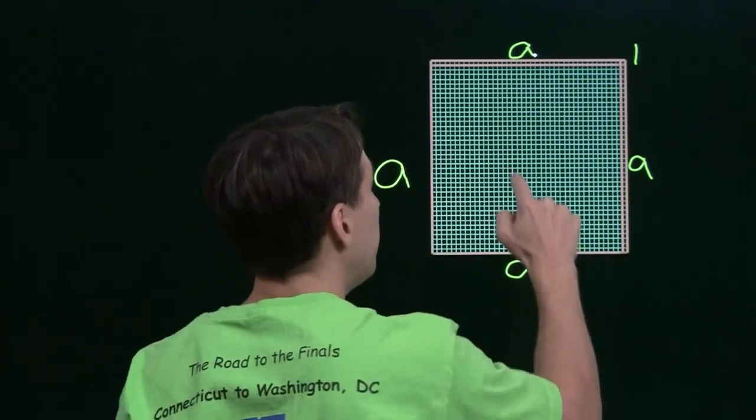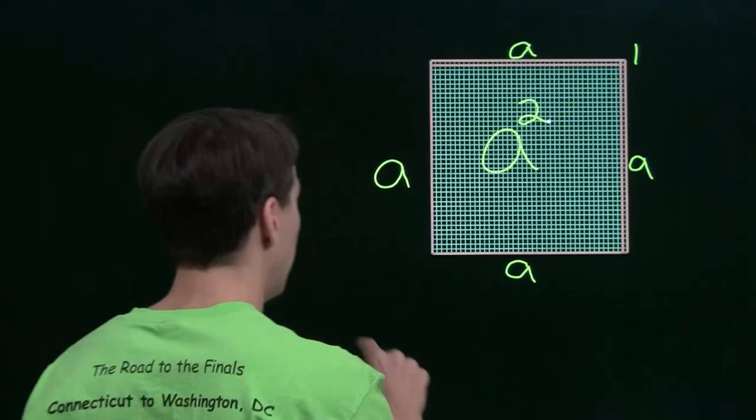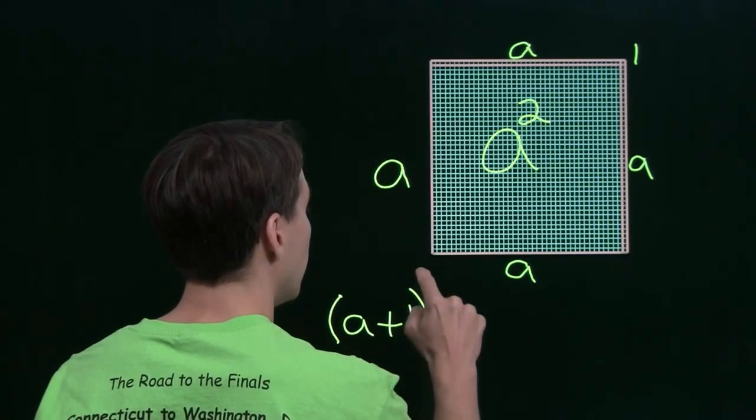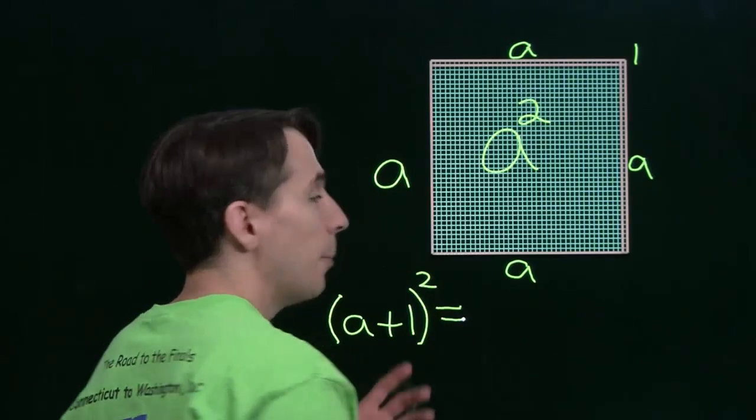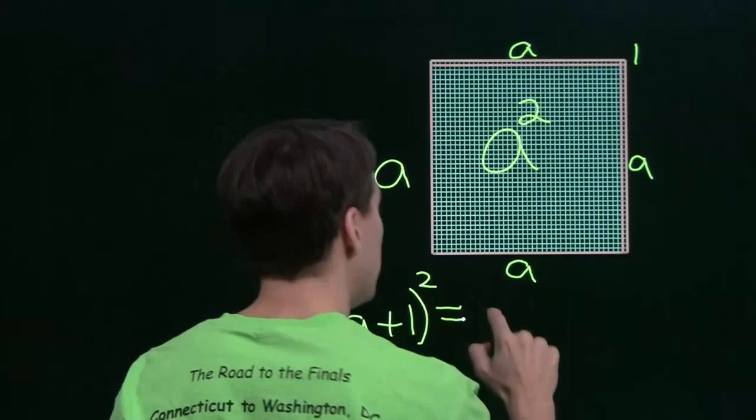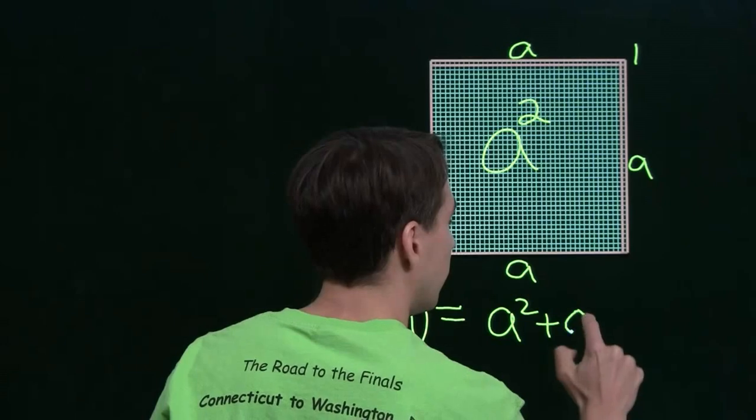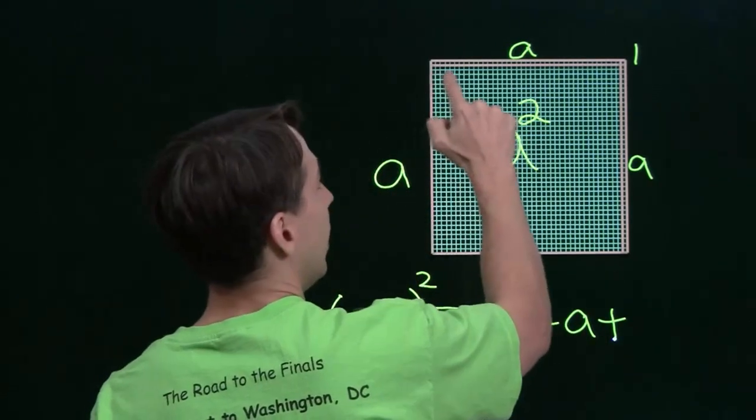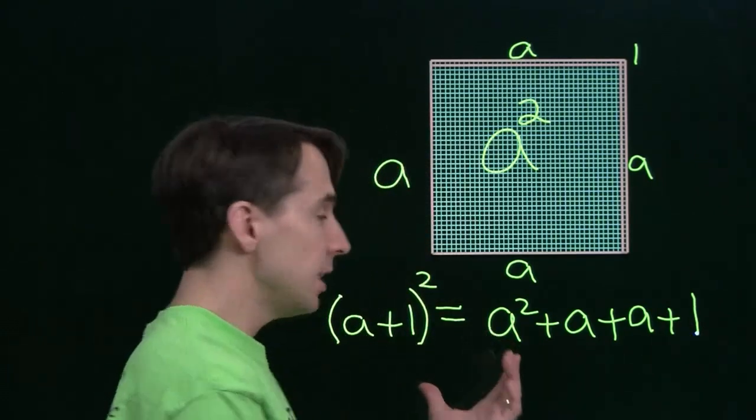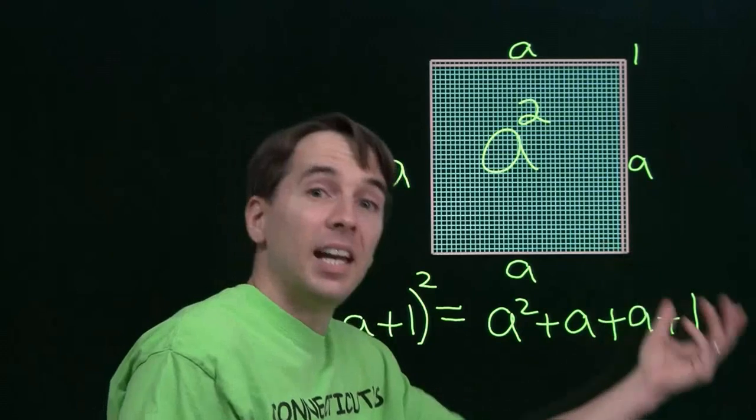So this middle square here, the big piece, has a squared total little squares. So the number of little squares in the whole diagram, of course, is a plus 1 squared. But that's also got to equal the number of little squares in each of these pieces when I add them all up. The big chunk here is a squared, of course. And then I add a, and then I add a here, and I add 1 there. Add the number of squares in each piece. And again, I see that to get to the square of a plus 1, I start from a squared, and I add a, and I add a plus 1.